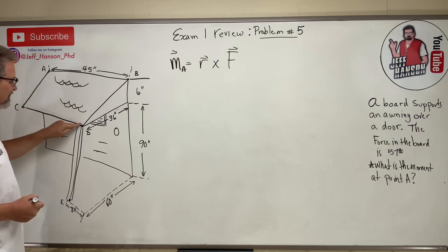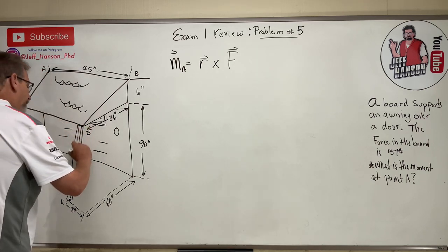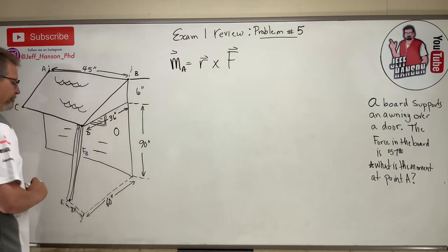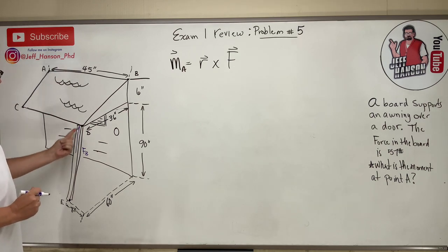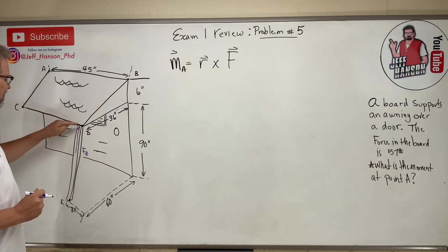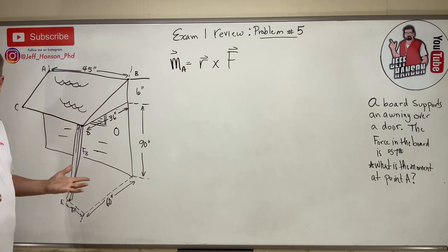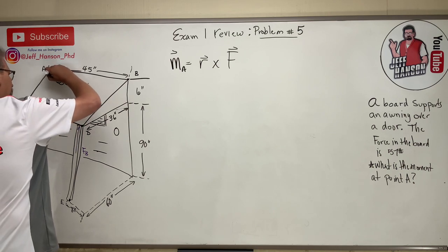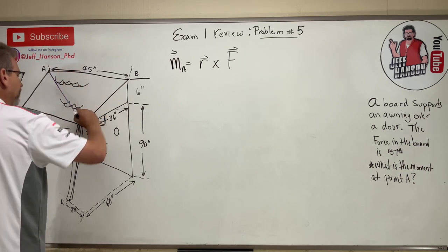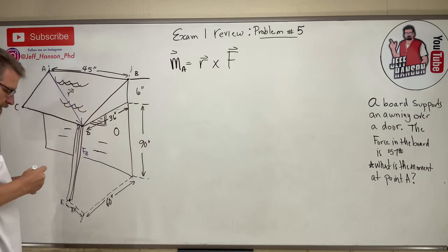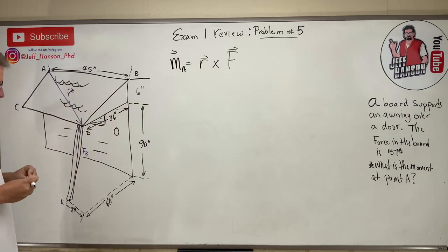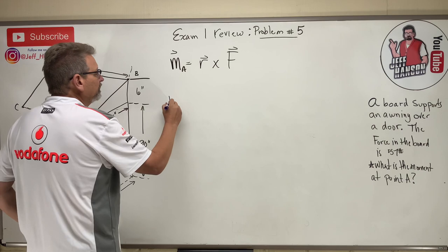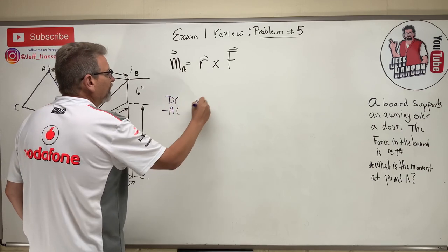The vector r can go from A to D — here's the force of the board — or from A to E; either one is fine. Let's go from A to D. That is our vector r. To write vector r, it goes from A to D, so we do D minus A.